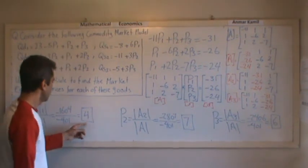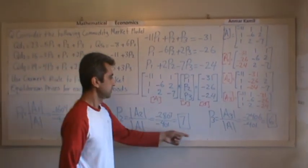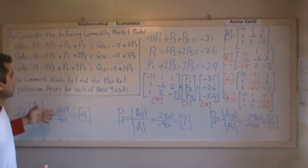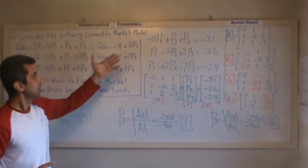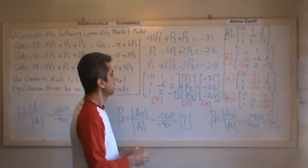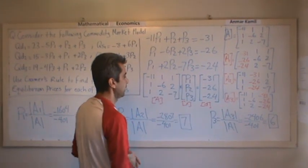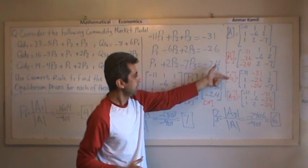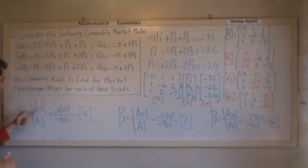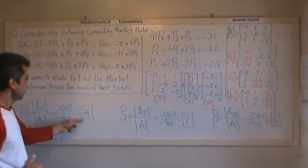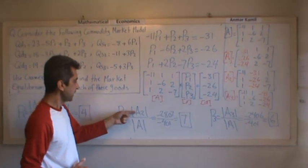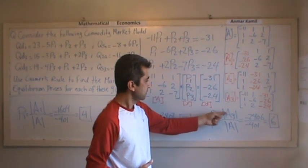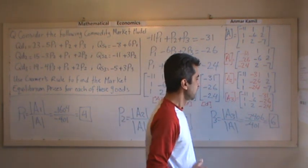These are the three prices for the equations. Let me recap: I had three equations and three unknowns. I set QD equal to QS for each good, moved variables to one side and constants to the other, transferred to matrix format, then set up matrices A1, A2, and A3. I found the determinant of A1 divided by A to get P1, determinant of A2 divided by A to get P2, and determinant of A3 divided by A to get P3. Thank you very much for watching.